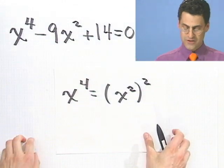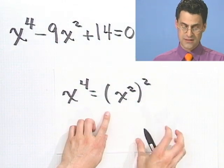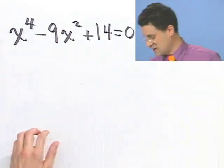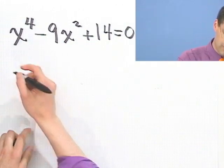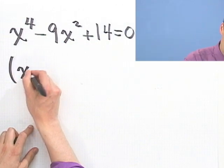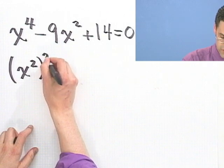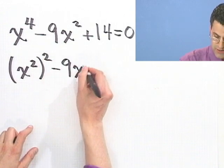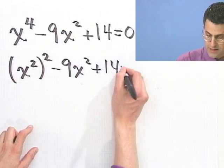Now there's two ways of doing this. We can just call this something else or we could just think about it as an x squared. Let me show you exactly what I mean here. So we have x squared squared minus 9x squared plus 14 equals 0.